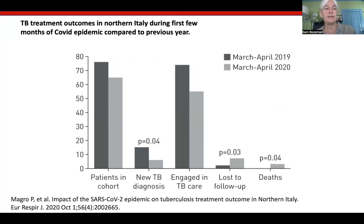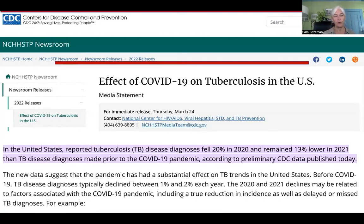So, taken together, it seems that while transmission probably did fall and the overall incidence of TB may have been less than in previous years, there was also a failure to provide TB services, including testing and follow-up, as well as a delay on the part of patients who found it difficult to access care during lockdown. These conclusions were also supported by a recent report from the US CDC, which found that in the US, TB cases fell in 2020 and remained lower than expected in 2021. The CDC suggests that not only was there a true reduction in incidence, but also that there was a reduction in detection of those cases that did occur.